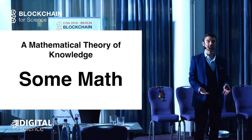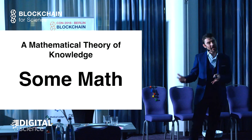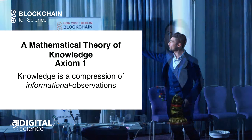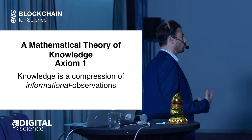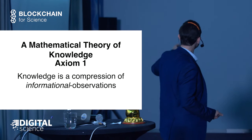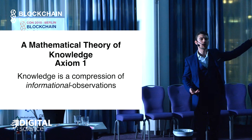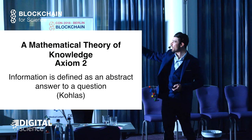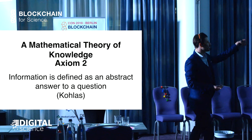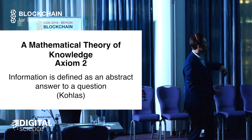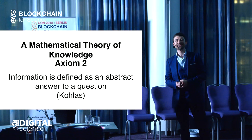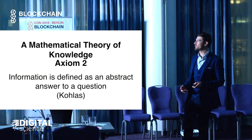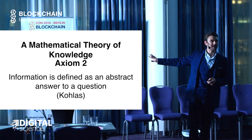If you clicked on this and you're watching this, I don't know what you were thinking because it's a mathematical theory of knowledge, not a philosophical theory of knowledge. So bear with it here. First off, we have the first axiom here in words. Knowledge is a compression of informational observations. What the heck does that mean?